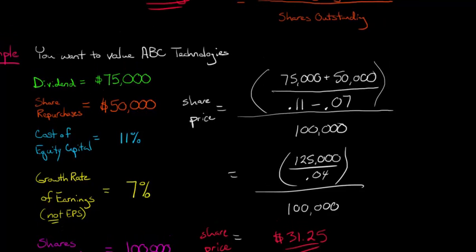This is our share price of ABC Technologies valued according to the total payout model. Now, see the difference between the dividend discount model and this total payout model is we've factored in this share repurchase, right? We're looking at all the distributions to equity holders, dividends and share repurchases. Whereas the dividend discount model was just looking at the stream of dividends and discounting that.